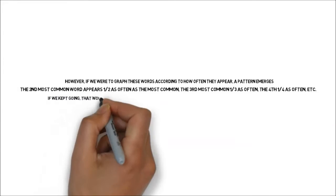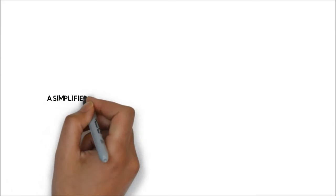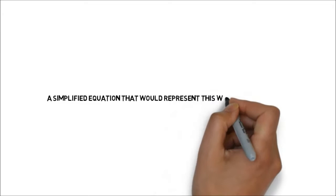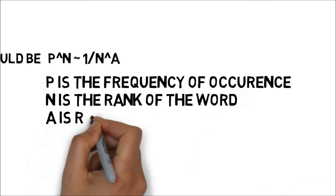If we kept going, that would mean the 670th most common word would appear 1 over 670 as often as the most common word. A simplified equation representing this would be: p to the power of n is roughly equal to 1 over n to the power of a — where p is the frequency of occurrence, n is the rank of the word, and a is roughly 1.